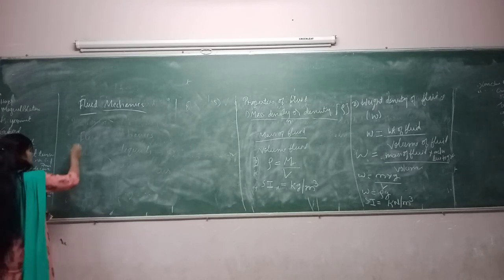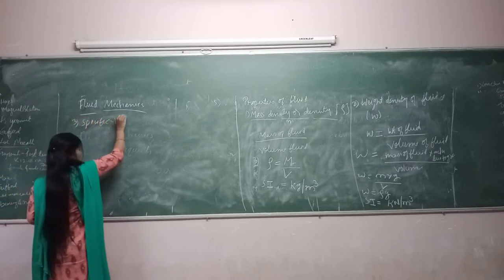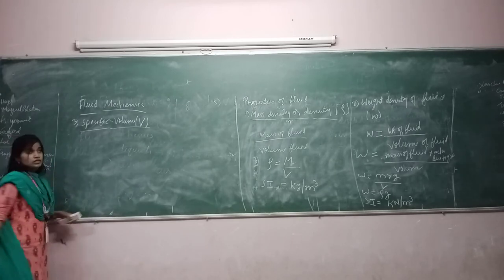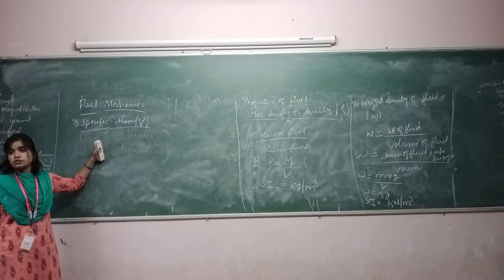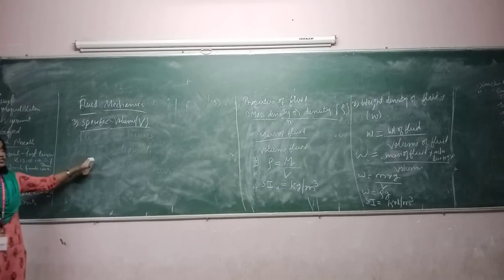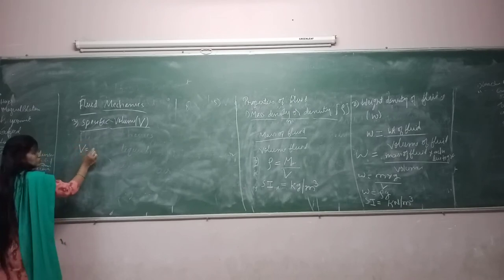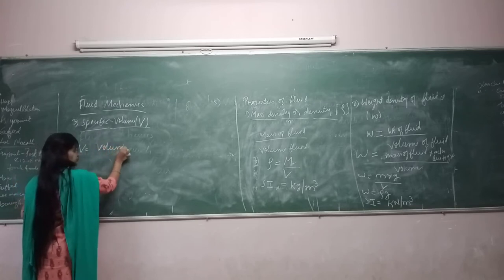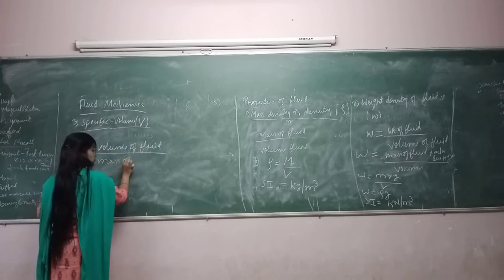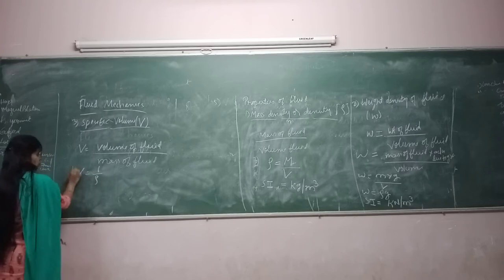The next property of the fluid is specific volume. Specific volume is the reciprocal of the mass density, represented as V equal to volume of the fluid to mass of the fluid. That is V equal to 1 divided by rho, the reciprocal of mass density.